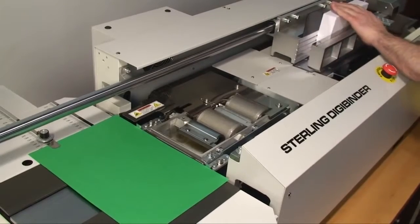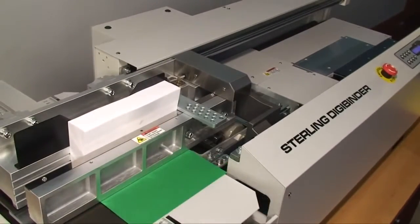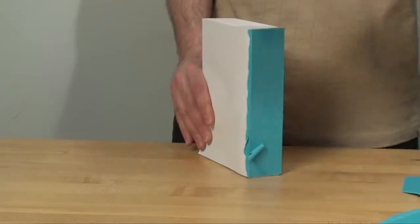The DigiBinder employs a unique roughing blade that not only notches but roughs the entire spine for gluing. This way, the glue seeps in through the entire backbone of the book, increasing its strength.